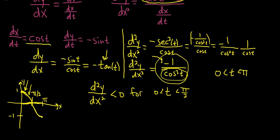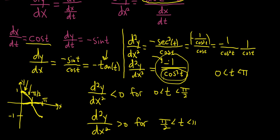Between π/2 and π, cosine is negative, so cos³(t) is negative. But there's a negative in the numerator, giving negative over negative, which is positive. So the second derivative is positive for t between π/2 and π.